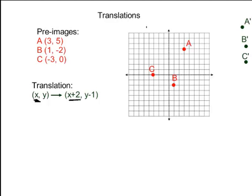So for us, A prime is going to show up not with an x coordinate of 3, but with an x coordinate of 3 plus 2, which is 5. For the y value, you're going to want to subtract 1 from every y coordinate. So A had a y coordinate of 5. We're going to subtract 1 from that, of course, get 4. And if you plot that point, (5, 4), A prime ends up right about there.